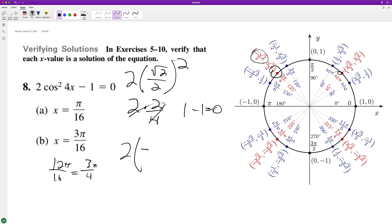2 times negative √2/2 squared equals 2 times 2/4. This reduces down to 1 minus 1 equals 0. So that verifies that these are both correct.